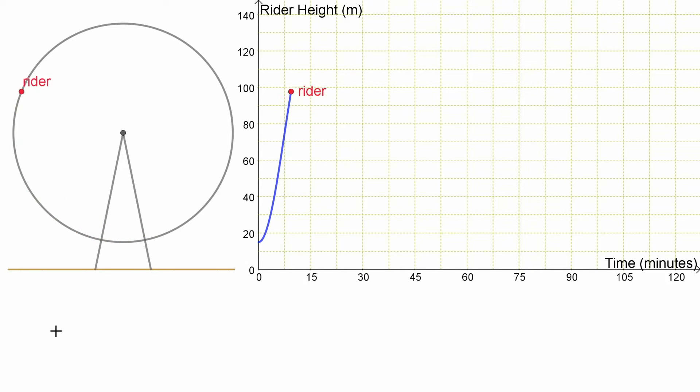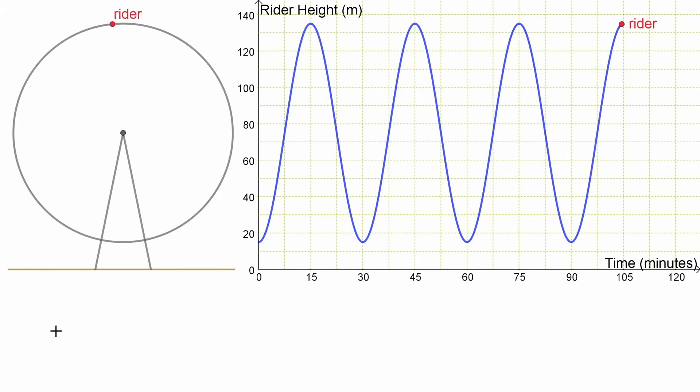So if we watch as the rider goes around here, they get up to the top and that graph gets to a maximum and then it gets back down to the bottom, a minimum and so on, another maximum. Now I've got this rider going around several times. In reality you would only get one time around the wheel but we want to see more of the graph so we're assuming that this rider is lucky enough to get to go around multiple times here.